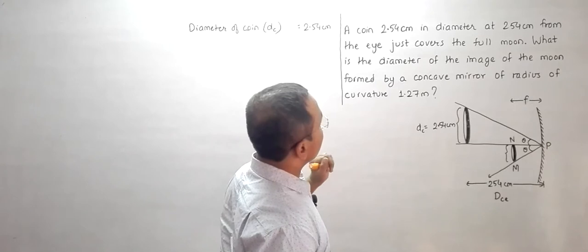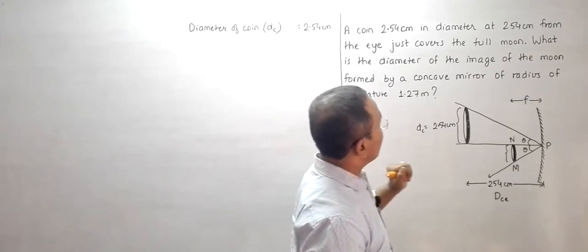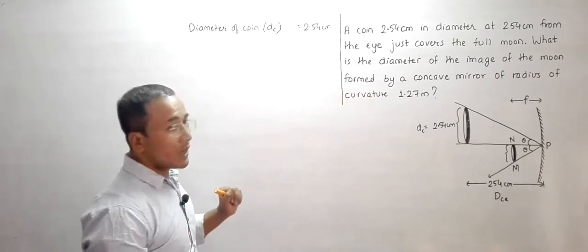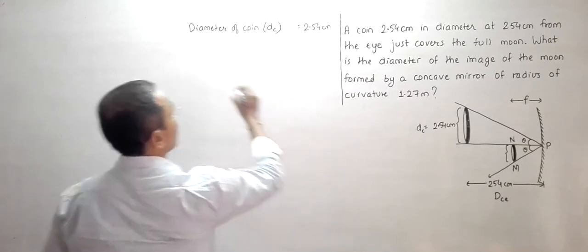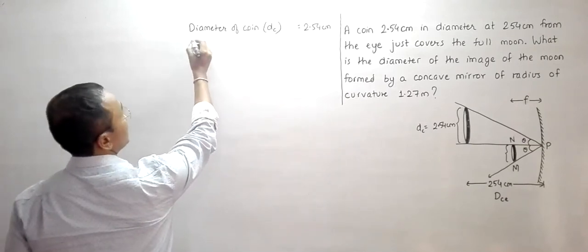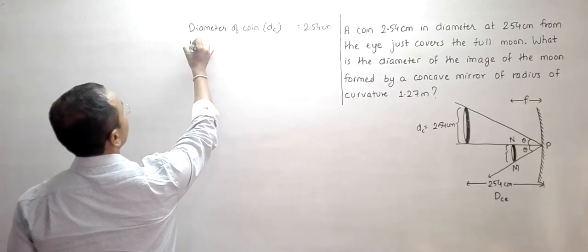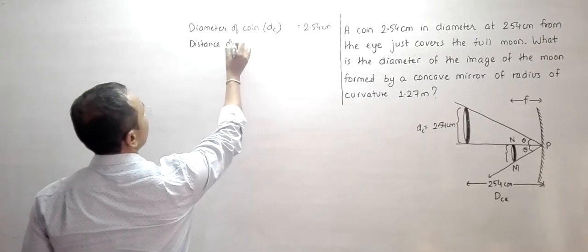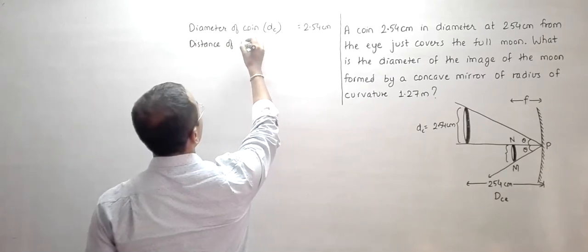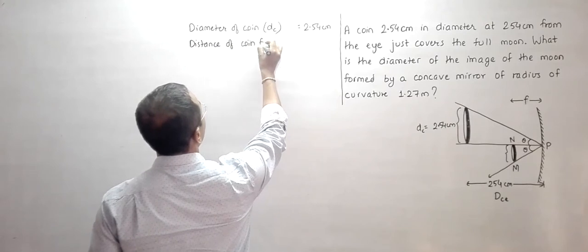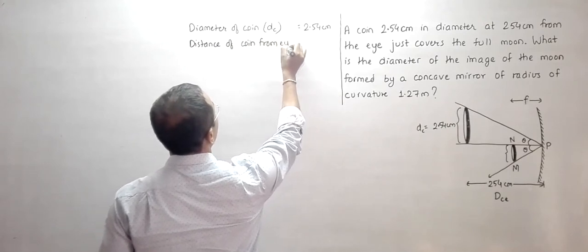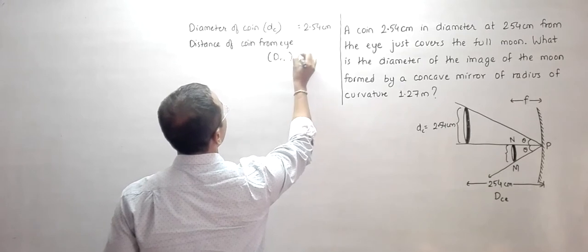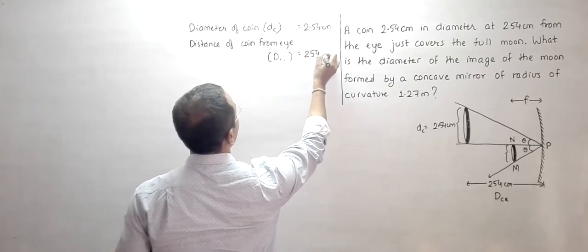The coin is placed at a distance of 254 cm from the eye. We write this distance of coin from eye as DCE = 254 cm.